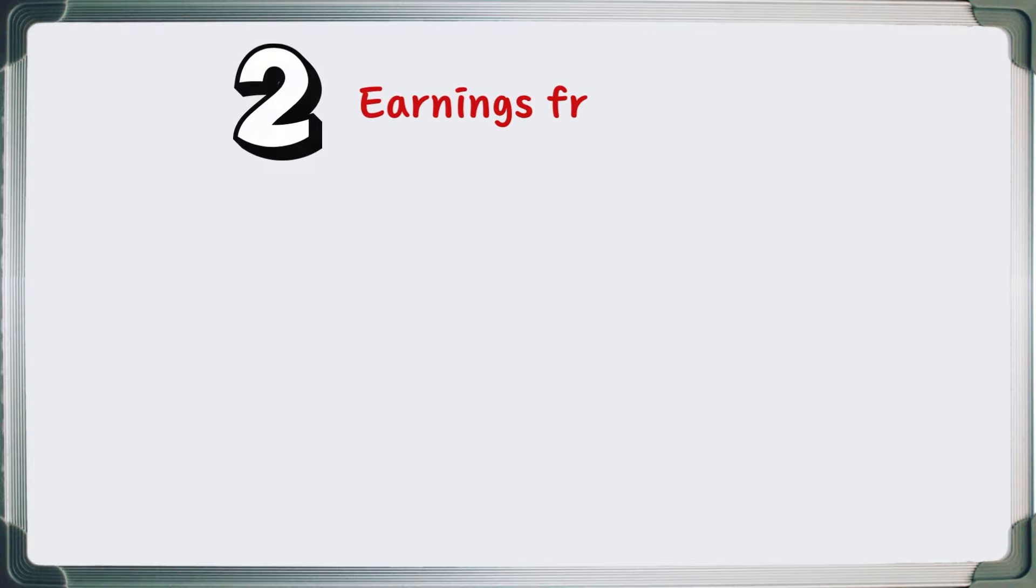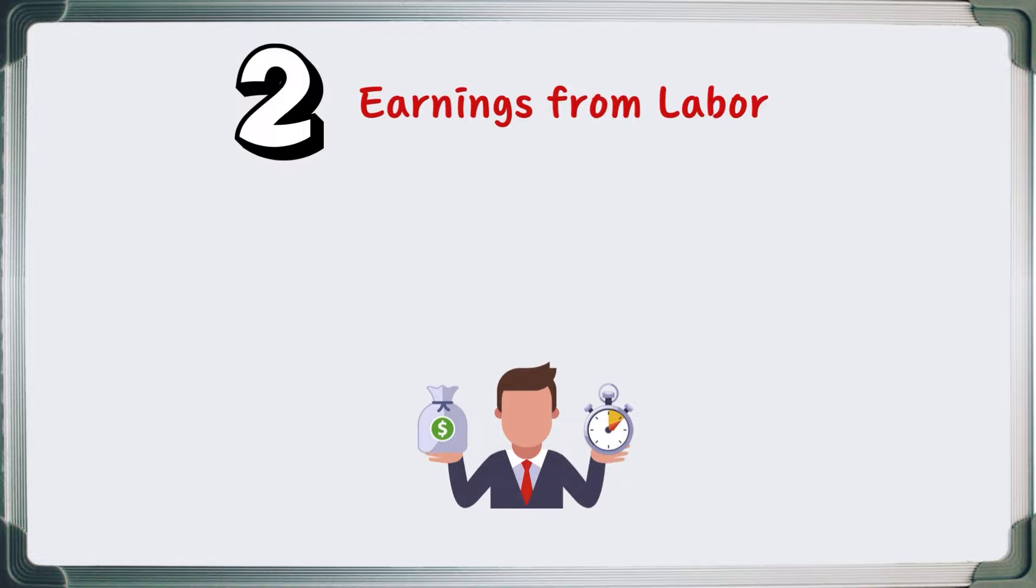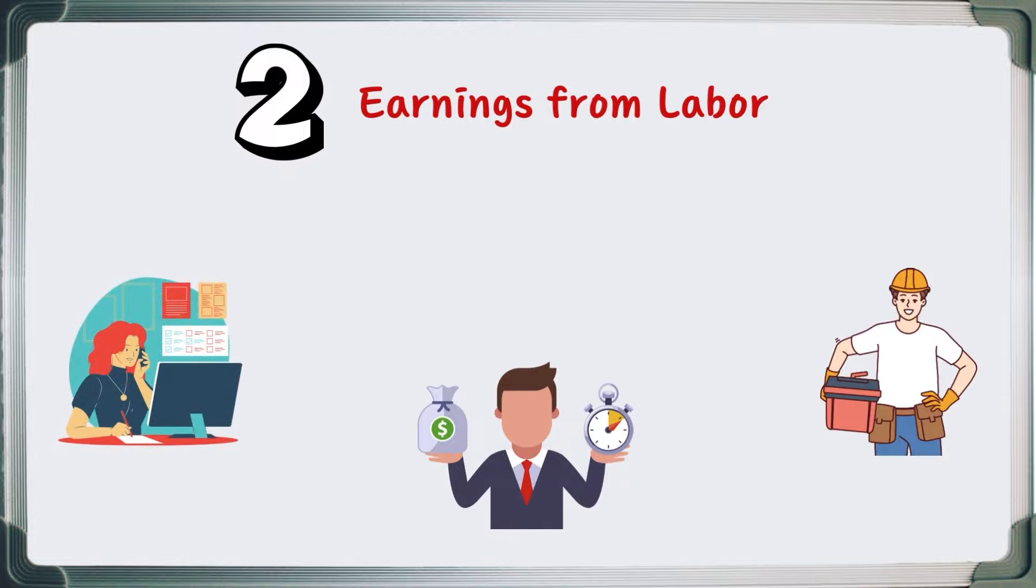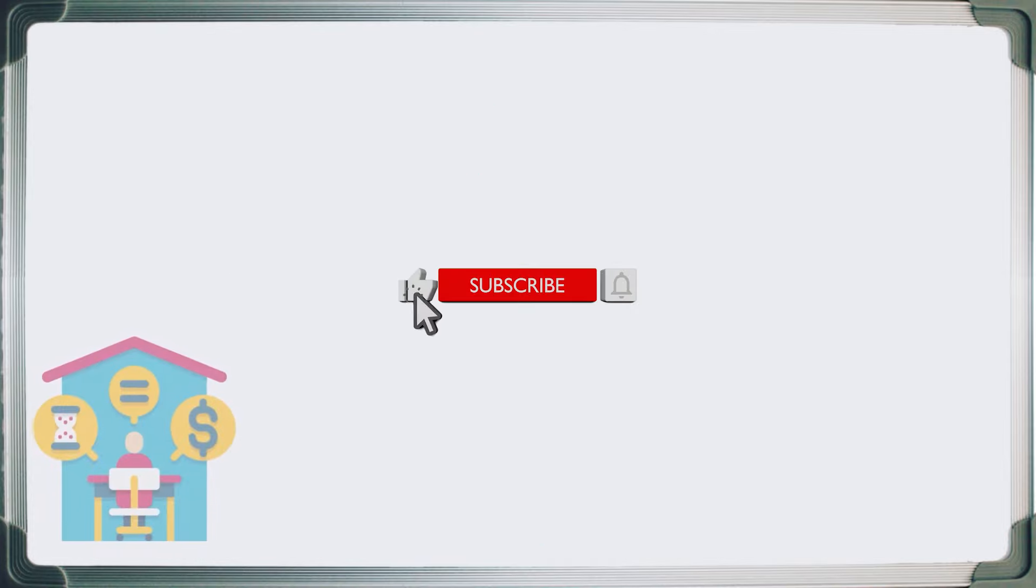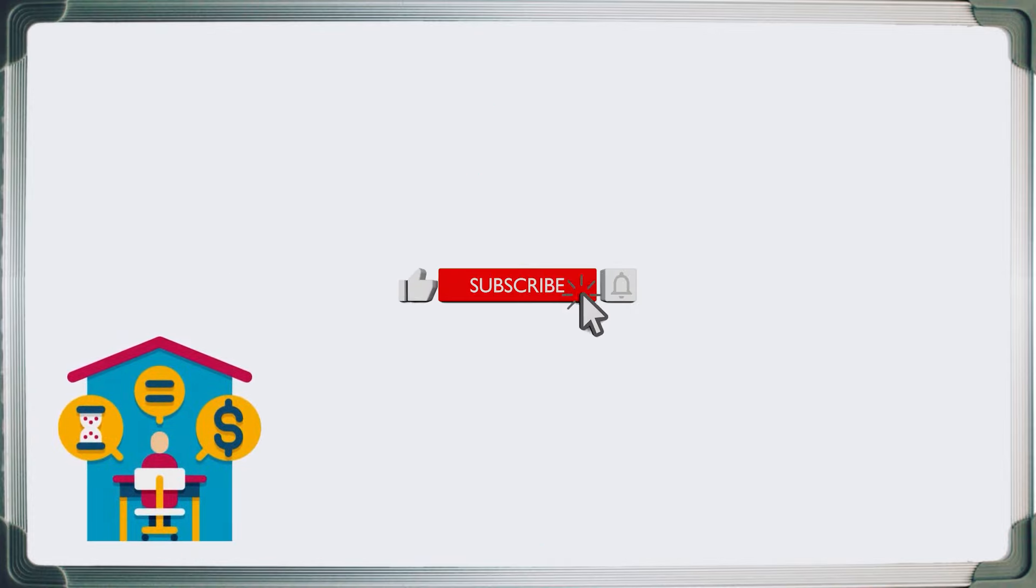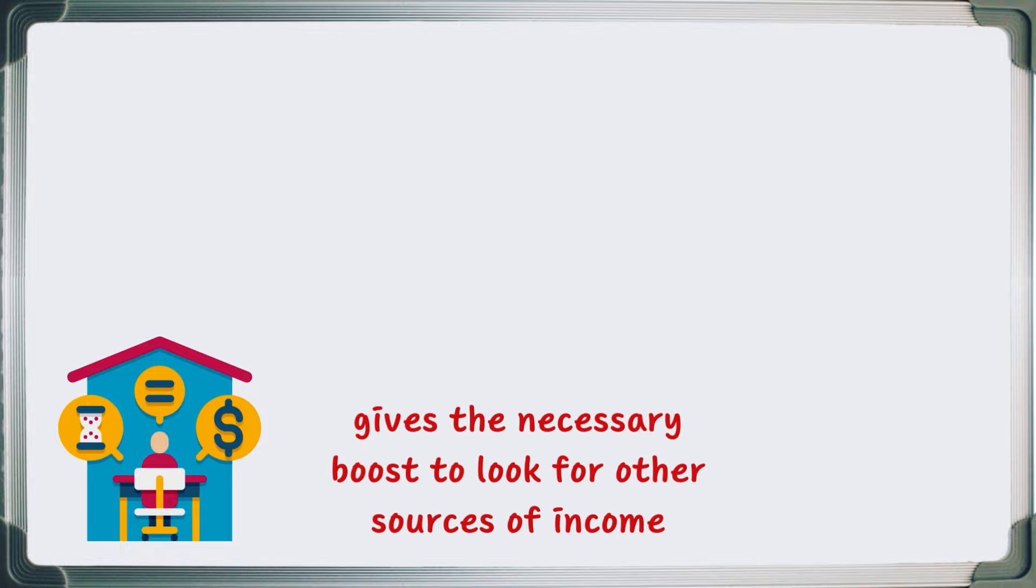Number two: Earnings from Labor. Earnings from labor are the money earned by working or investing time in a project. This can be your job salary, payment for working for someone else, or contract payments. It is also the most common source of income worldwide. In general, labor earnings form the foundation for most self-made millionaires, giving them the necessary boost to explore other income sources we will discuss later.